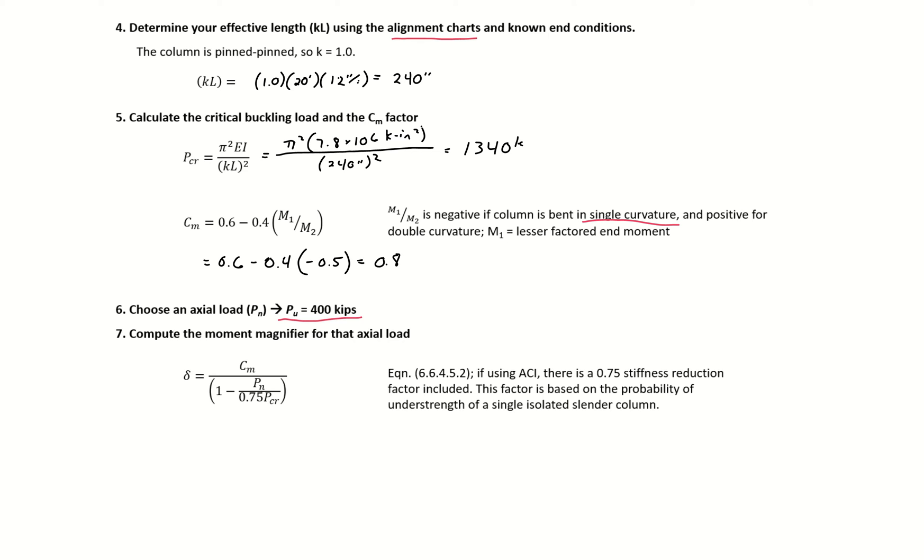Then we can calculate our moment magnifier for this given axial load. Our moment magnifier is C_M divided by 1 minus P_u divided by 0.75 times P_critical, so 0.8 divided by 1 minus 400 divided by 0.75 times 1,340 kips.